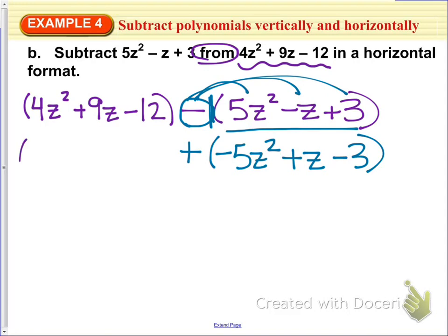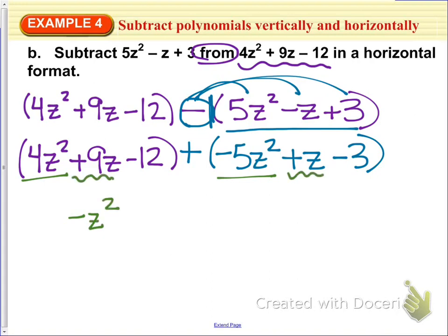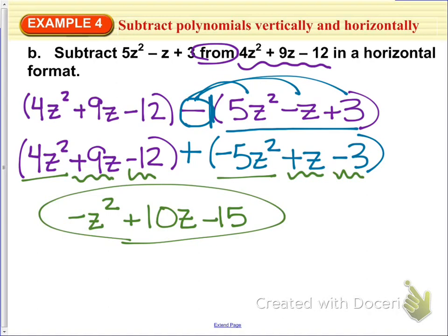So I'm going to re-copy my first polynomial, 4z squared plus 9z minus 12. And then I will go ahead and combine some like terms. So 4z squared minus 5z squared is negative, or the opposite of z squared. 9z plus z gives me 10z. Negative 12 minus 3 gives me negative 15. And so that is simplified completely.